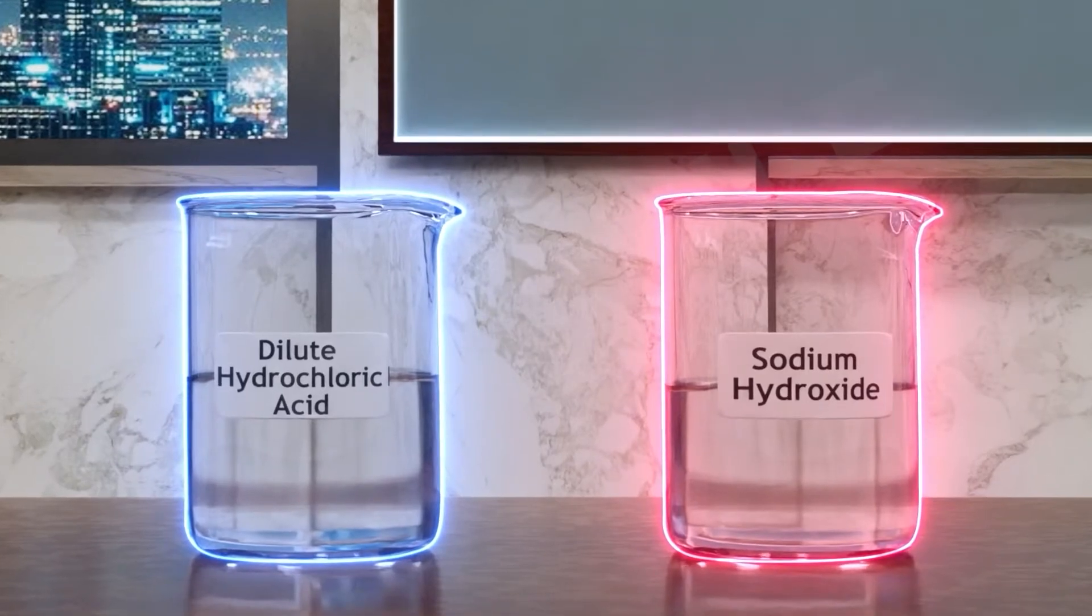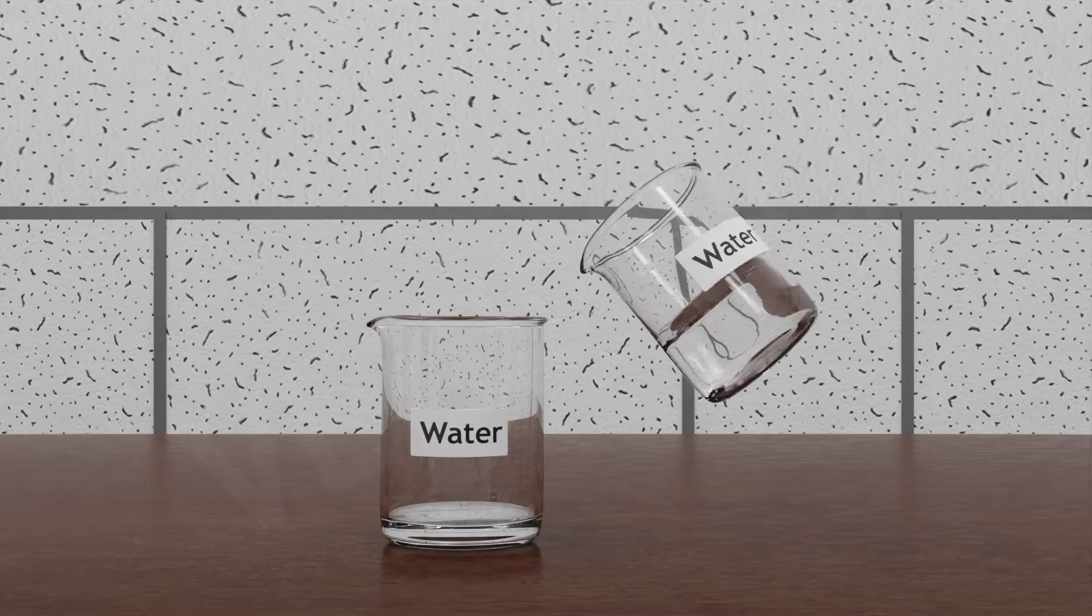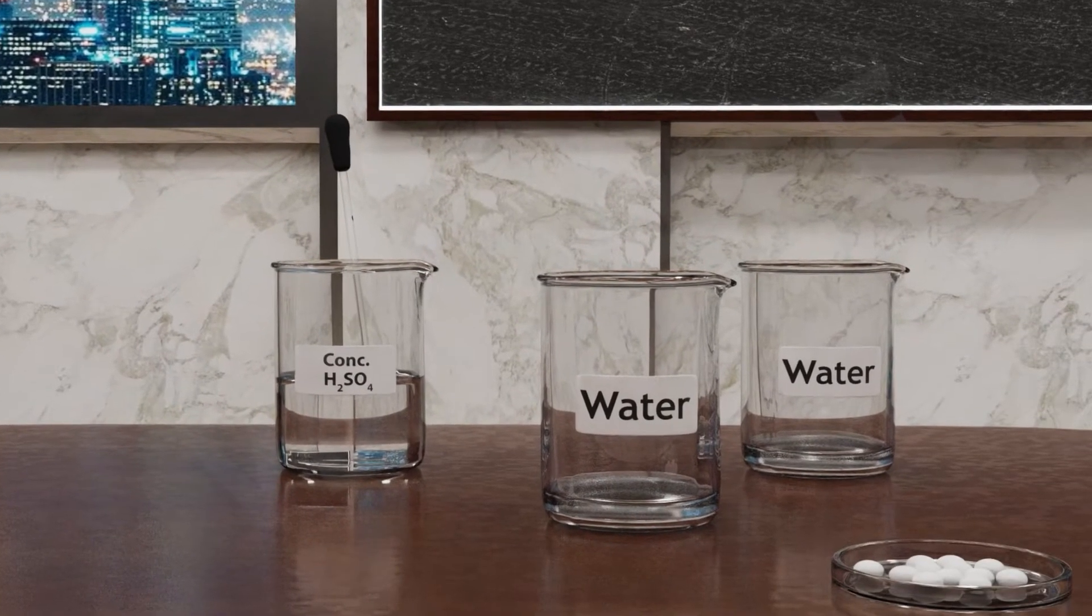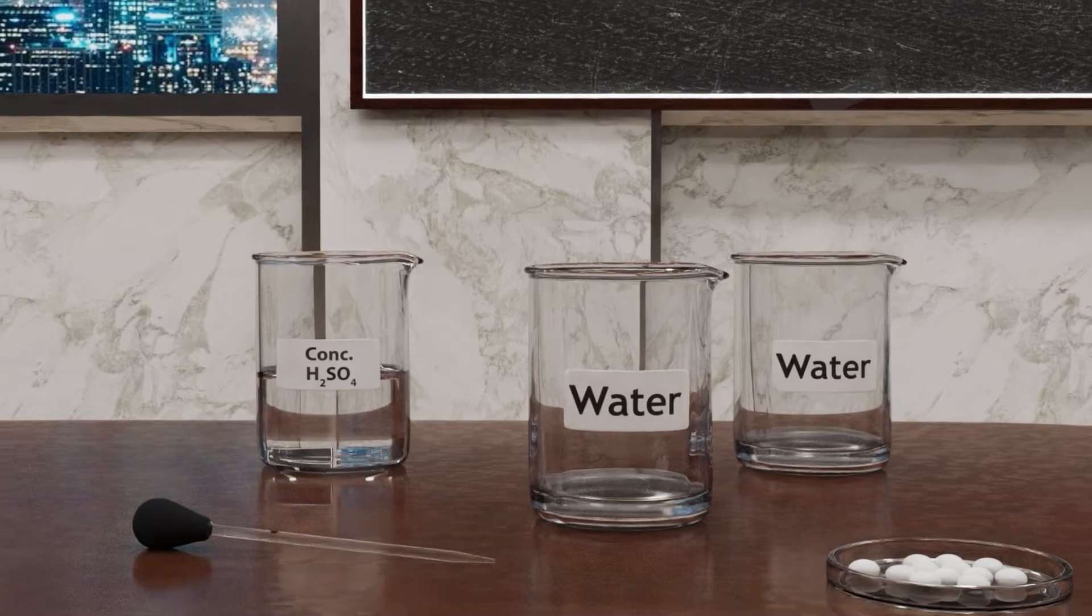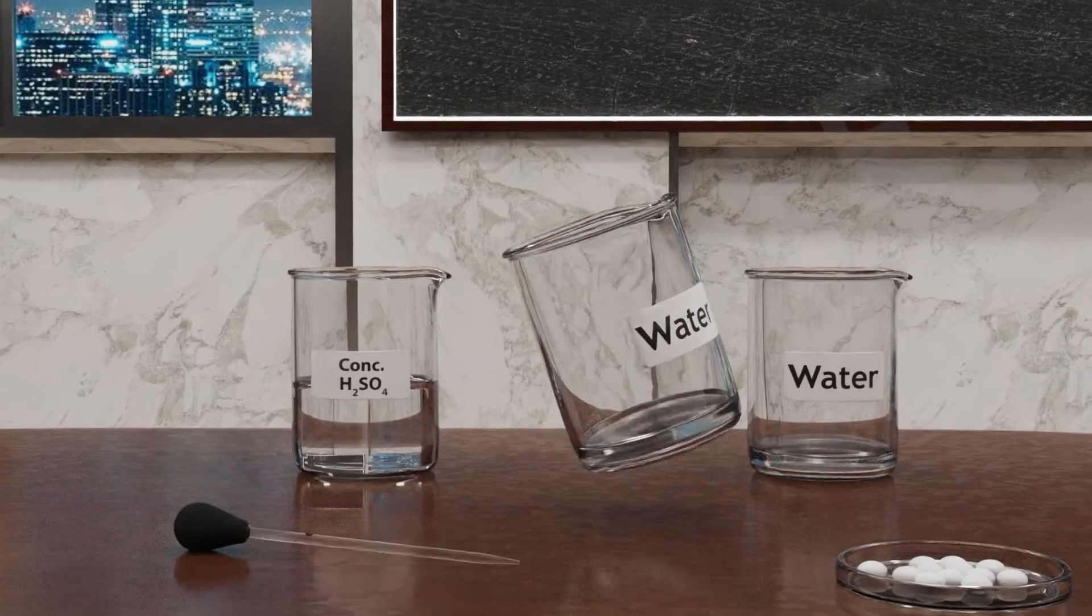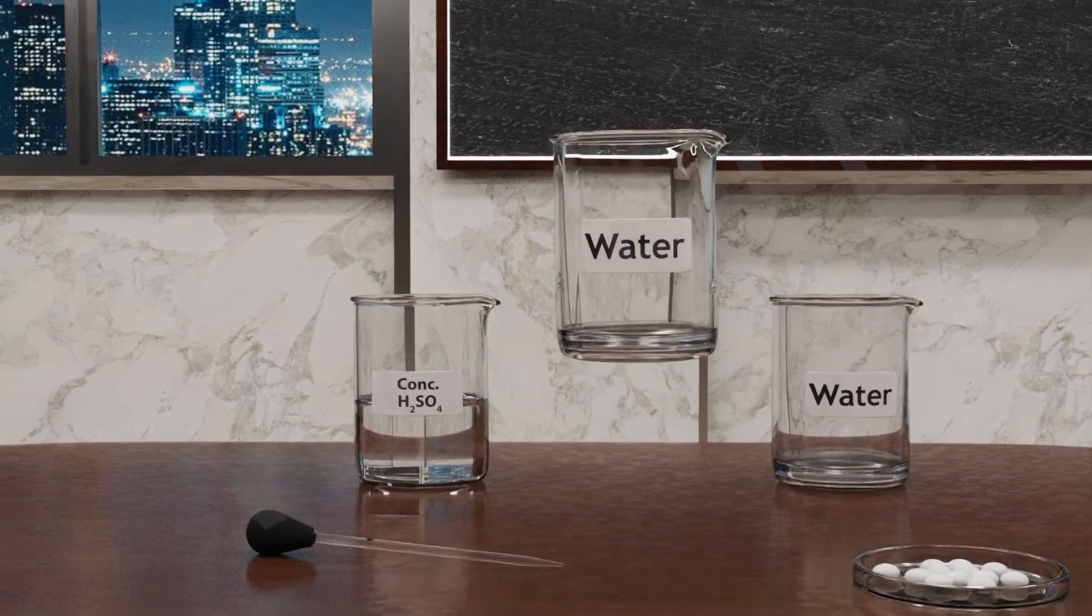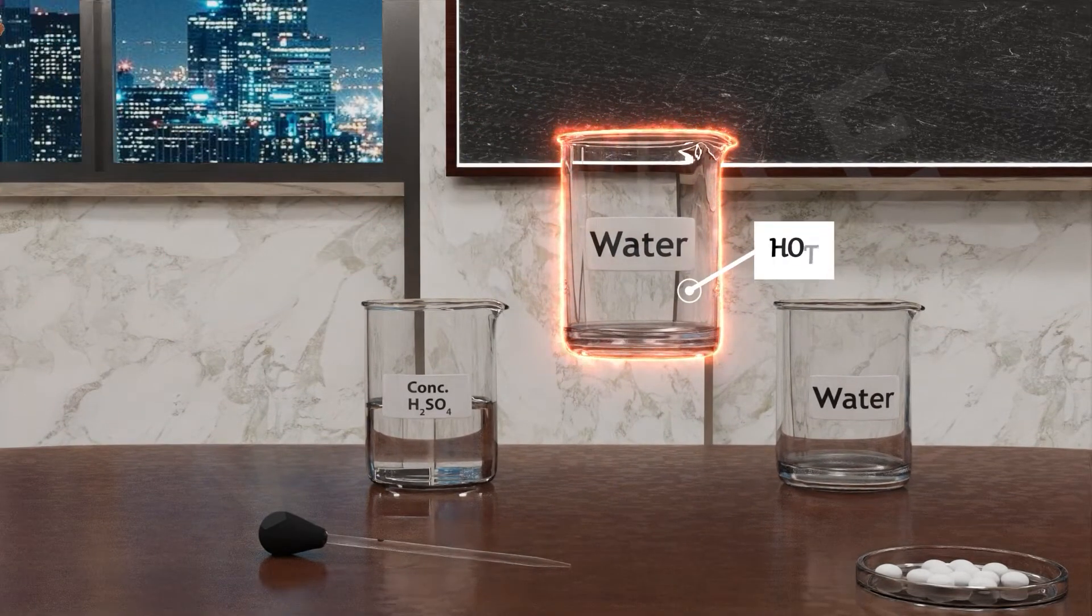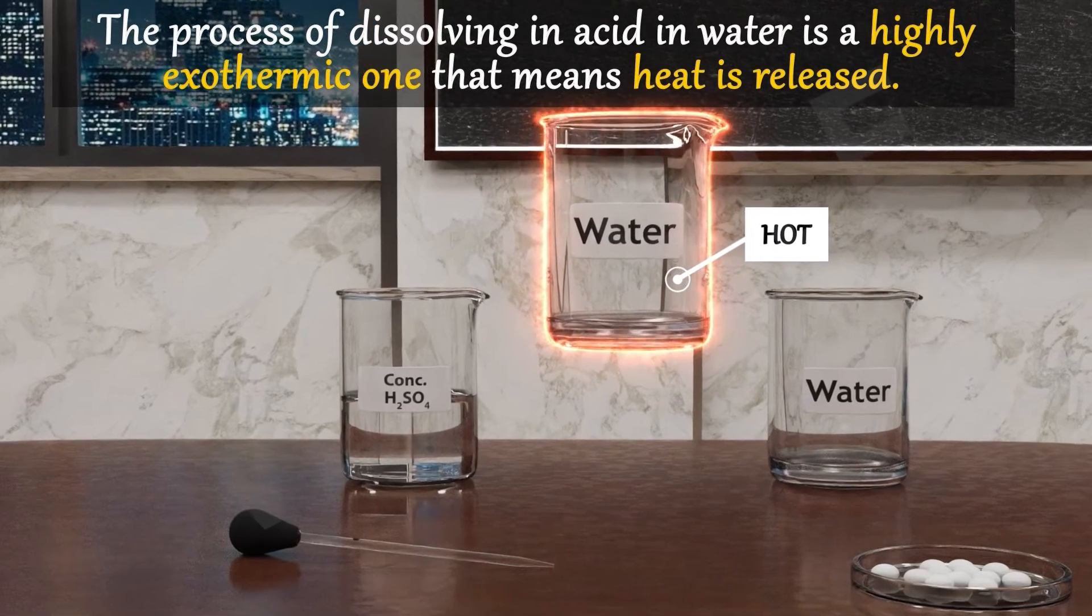Take 10ml water in a beaker, add a few drops of concentrated H2SO4 in it and swirl the beaker slowly. Now touch the base of beaker. Oops, it's too hot!